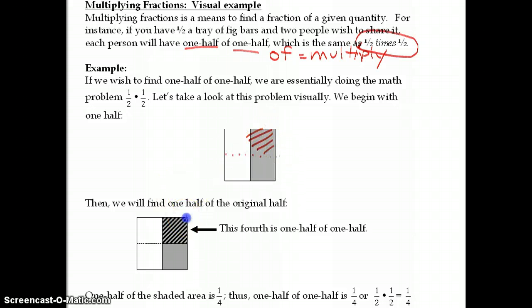It's shown right here as well. One half of one half is one fourth. So that means that one half times one half equals one fourth.